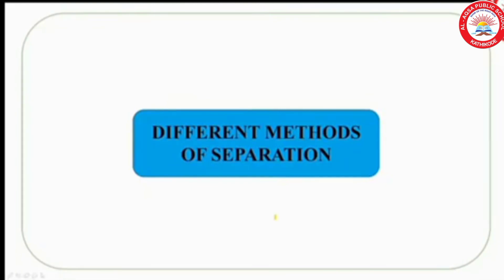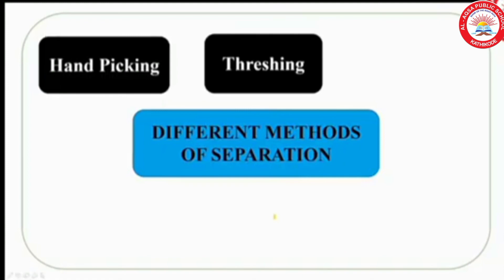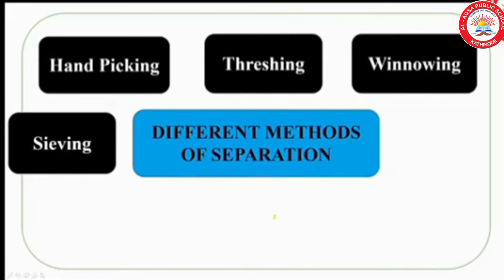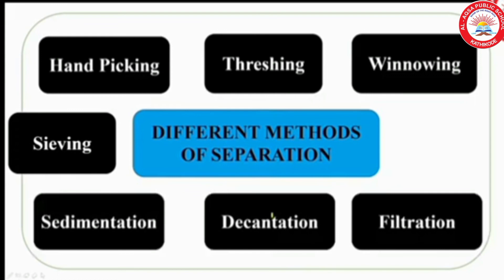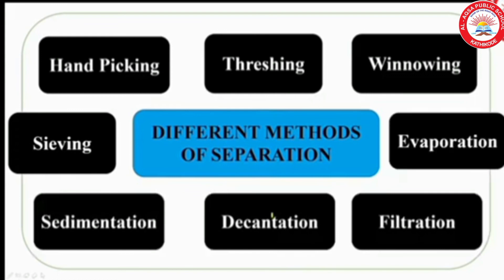Now, the different methods of separation we have to study in this chapter are: hand picking, threshing, winnowing, sieving, sedimentation, decantation, filtration, and evaporation. These are the different methods of separation we will cover in this chapter.